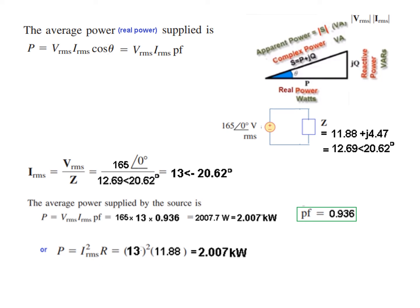Here also we can directly calculate in terms of I squared R. So I is 13 squared, and R from here you can see this is the real part, which is R, and this is the imaginary part. So we'll use this 11.88 as R, and the answer we get is the same answer.